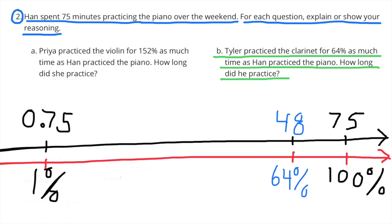B: Tyler practiced the clarinet for 64% as much time as Han practiced the piano. How long did he practice? Again, I made a double number line with Han's 75 minutes as 100%. I divided 100% by 100 to get 1%, and divided 75 by 100 to get 0.75. Since Tyler practiced 64% as much, I multiplied 0.75 times 64, and got 48. Tyler practiced the clarinet for 48 minutes.